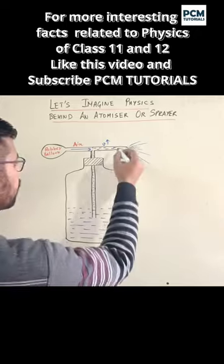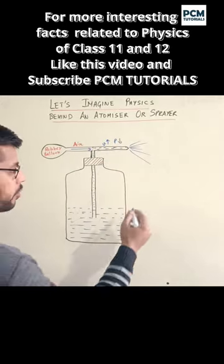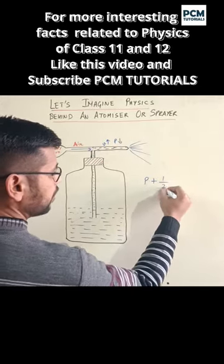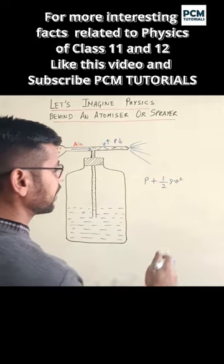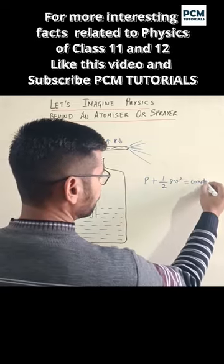Now why is this? According to Bernoulli's equation, when we talk about pressure plus 0.5ρv², when we go on a horizontal plane, it becomes a constant.